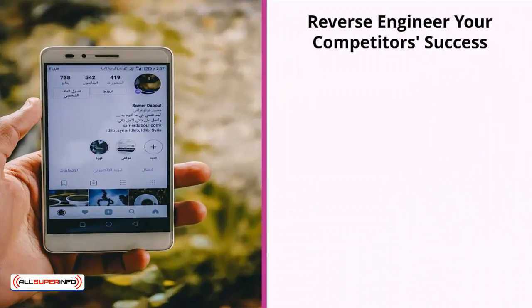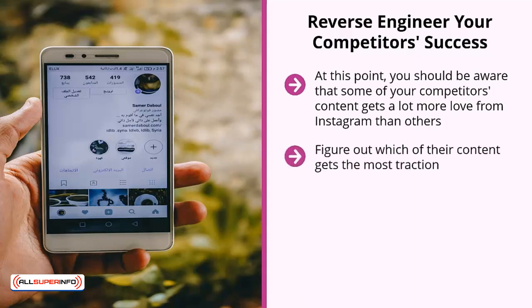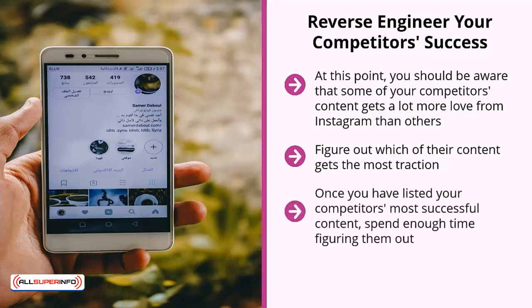Reverse engineer your competitors' success. At this point you should be aware that some of your competitors' content gets a lot more love from Instagram than others — this should be your top priority. Figure out which of their content gets the most traction. I am of course talking about the number of likes, comments, and other indicators of popularity. Forget about everything else. Once you have listed your competitors' most successful content, spend enough time figuring them out. Pay attention to the hashtags they use and take note of the kinds of pictures or videos that are most popular.